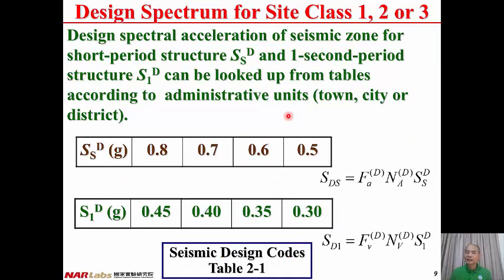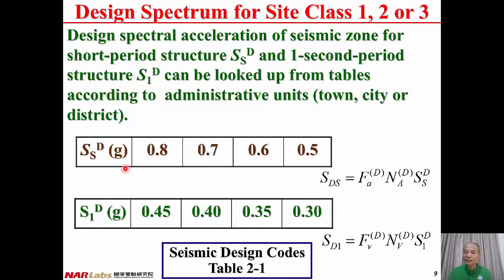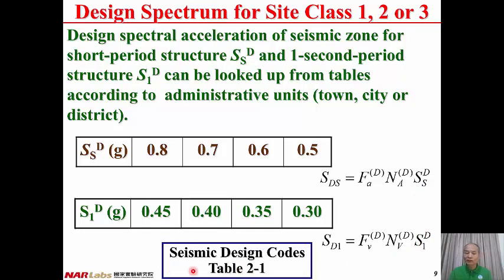The design spectral acceleration of seismic zone for short period structure, SSD, and for one-second period structure, S1D, can be looked up from tables according to administrative units such as township, city, or district. There are totally four values for SSD: 0.8, 0.7, 0.6, and 0.5G. For S1D, there are also four values: 0.45, 0.4, 0.35, and 0.3G. The unit is G, the gravitational acceleration. SSD and S1D can be obtained by looking up Table 2-1 of the seismic design codes.